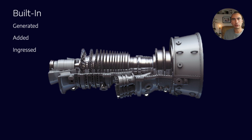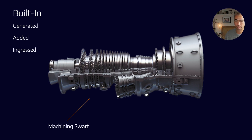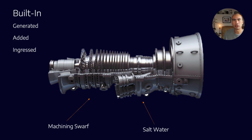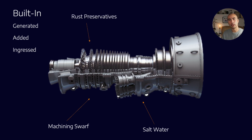For built-in, we're generally talking about contaminants that come when the product is shipped to us. So if I have a GE gas turbine — not picking them for any particular reason — it could come with machining swarf in it. Maybe after manufacturing they didn't do a flush of the system, so there are metal particulates throughout. Maybe there is some salt water — it's very common, particularly where I live in Australia, that all these components are shipped by sea, so inevitably there's going to be some salt water contamination.